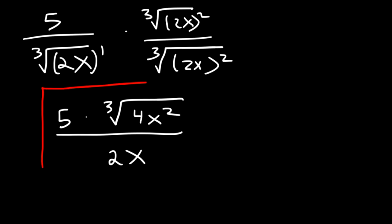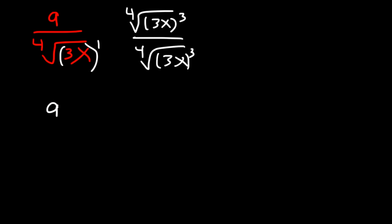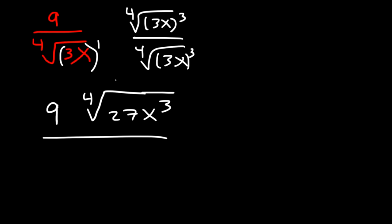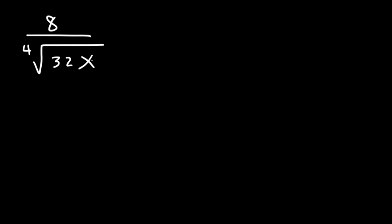Try this one: 9 divided by the fourth root of 3x. In this case we need four 3x terms in the bottom, so we multiply by the fourth root of 3x to the third power. On top that gives 9 times the fourth root of 27x cubed. On the bottom we now have four 3x terms, so it simplifies to just 3x. Since 9 divided by 3 is 3, the final answer is 3 times the fourth root of 27x cubed, divided by x.